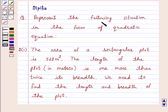Question says, represent the following situation in the form of quadratic equation. The area of a rectangular plot is 528 meters square. The length of the plot in meters is one more than twice its breadth.